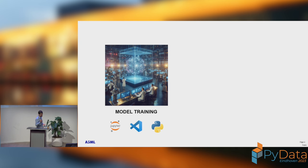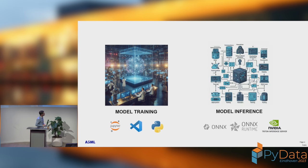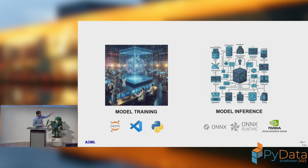We have two stages: model training and model inference. I generated those images with DALL-E 3, and as you can see, model training looks very nice, while model inference is just a bunch of blocks connected with something. During model training, we just experiment — we have Jupyter, VS Code, we build the model, and the output is some file. Then in production, we have a lot of different technologies built on top of that. Here I have ONNX, ONNX Runtime, and something very specific for NVIDIA: Triton. We'll go into those two stages.